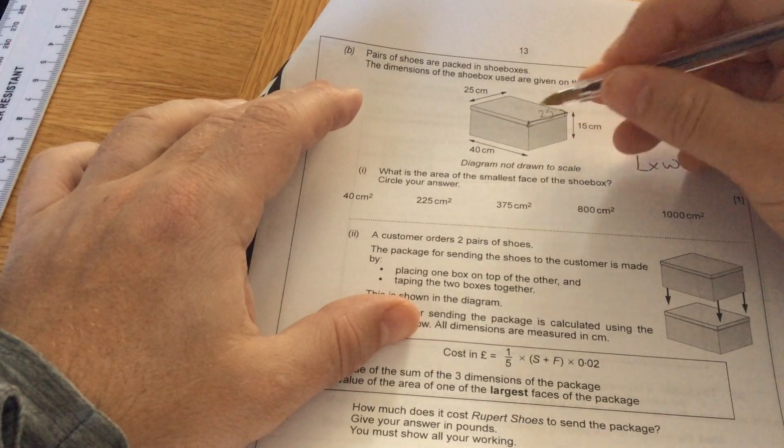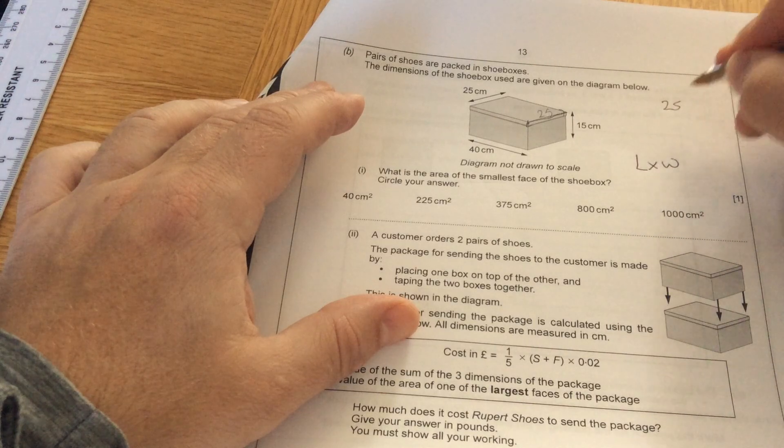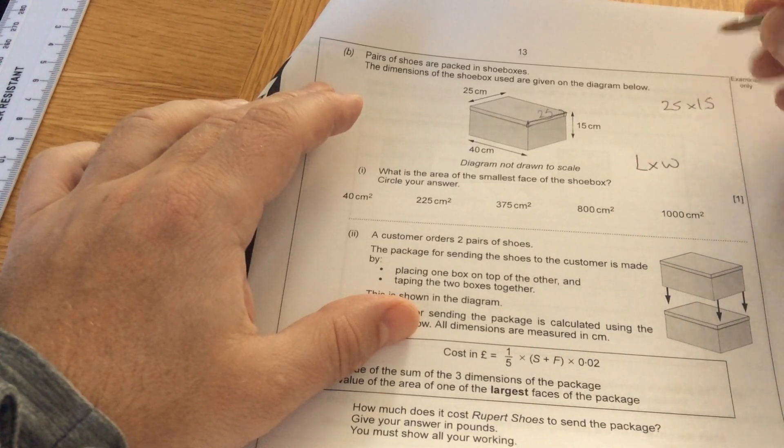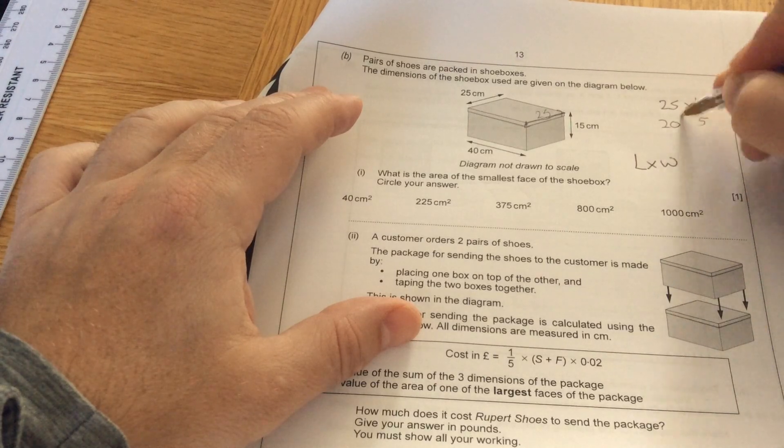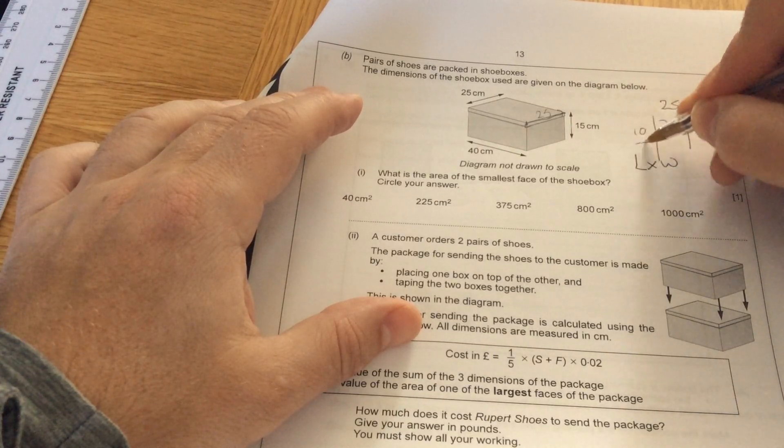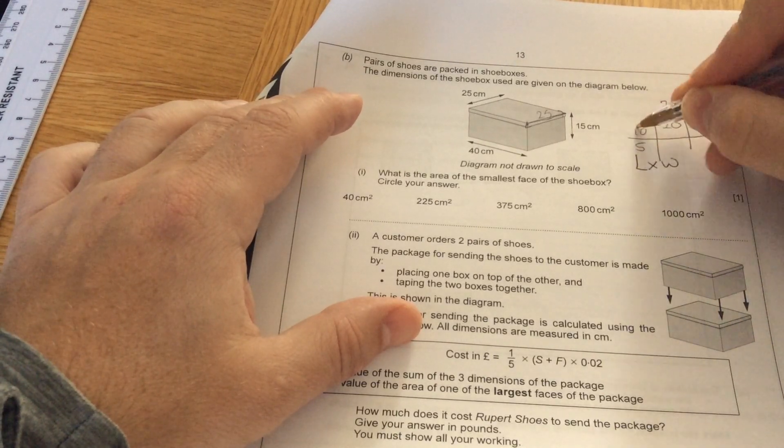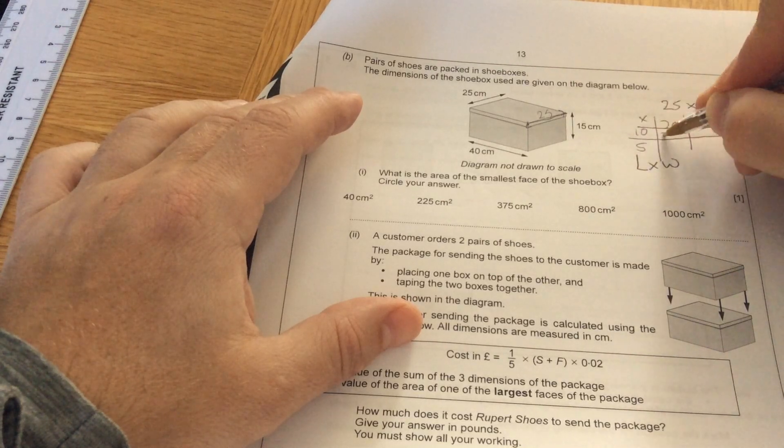The smallest one would be 15 multiplied by 25, length times width by multiplying the two smallest numbers. So 25 times 15. If I'm working that out, I'll split it up: 20 and 5, 10 and 5.